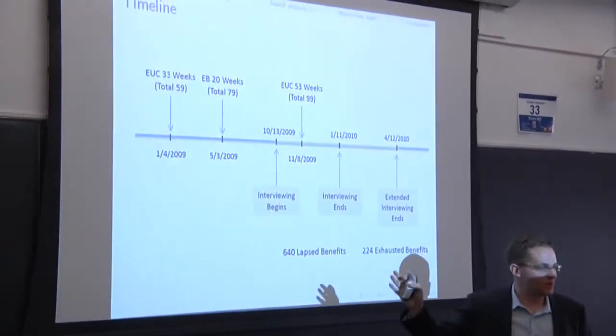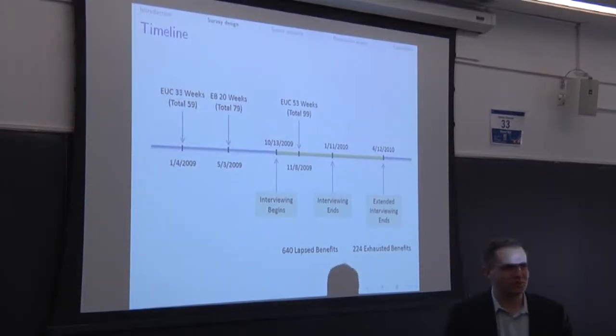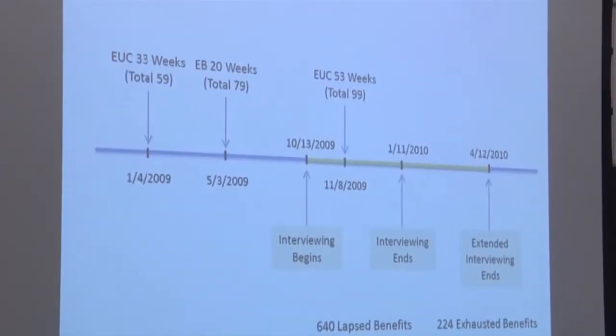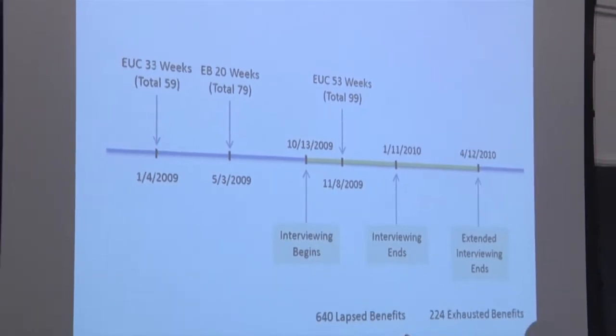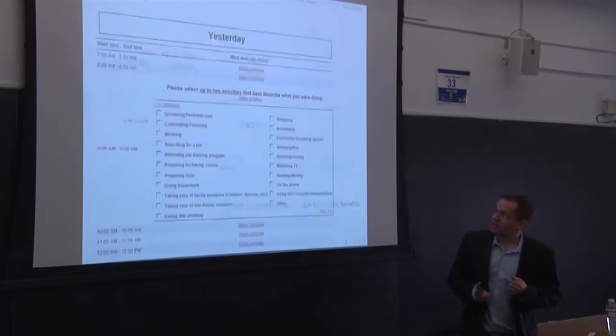So this is how it started. We did interviewing from mid-October to beginning of January of 2010 and then an additional 12 weeks for the long-term unemployed. Somewhat unfortunate, in the survey, there was an extension of unemployment insurance because one of the ideas we also wanted to address is what happens when people exhaust their unemployment insurance. Obviously we didn't have that many people after that because unemployment insurance was extended by an additional 20 weeks.